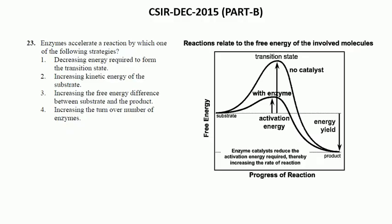CSIR examination. The first question was asked from the reaction rate. The question is: enzymes accelerate a reaction by which of the following strategies? Decreasing the energy required to form the transition state. Second option is increasing kinetic energy of the substrate. Third, increasing the free energy difference between substrate and product. Fourth option is increasing the turnover number of enzymes.